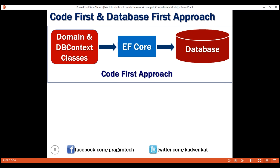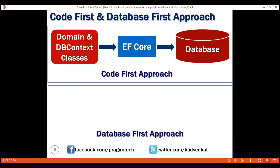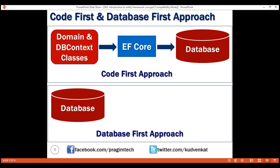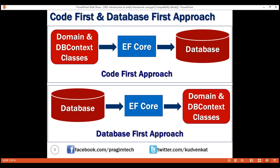Out of the box, EF Core uses its default conventions to create the database and database tables. You can change these default conventions if you want to. We'll look at this code first approach in action in our upcoming videos. Sometimes we may have an existing database. When we have a database and the database tables already, we use the database first approach. With the database first approach, EF Core creates the DB context and domain classes based on the existing database schema.